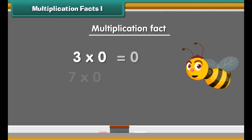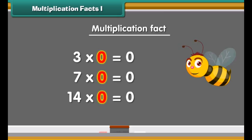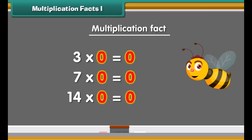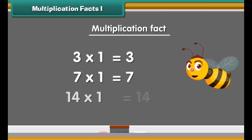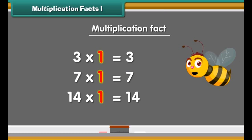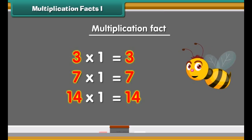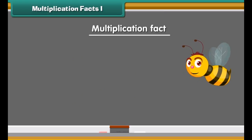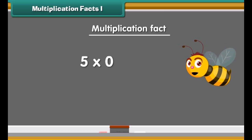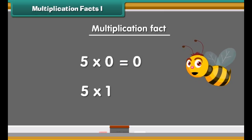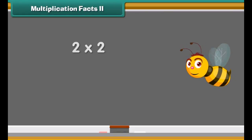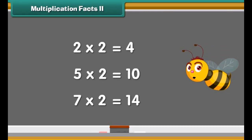We start with some multiplication facts. Any number multiplied by 0 is always equal to 0. A number multiplied by 1 is equal to the same number. For example, 5 multiplied by 0 is 0, and 5 multiplied by 1 is 5.